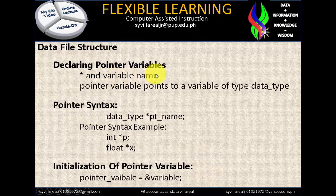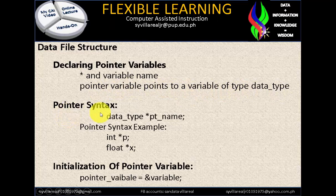Declaring pointer variables: we use an asterisk followed by a variable name. The pointer variable points to a variable of type data type. Pointer syntax: data type, space, asterisk, pt_name. The variable name is pt_name, the asterisk is the sign of pointer, and the ampersand is the sign of address. Pointer syntax example: integer *p — pointer variable p; float *x — pointer variable x.